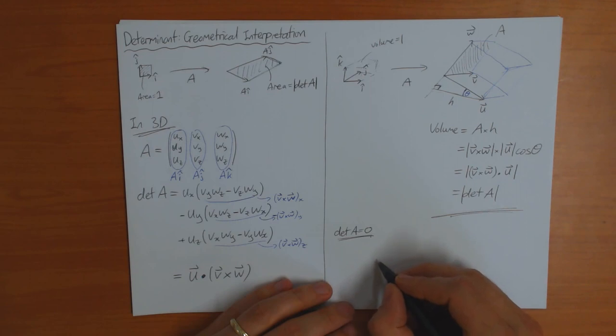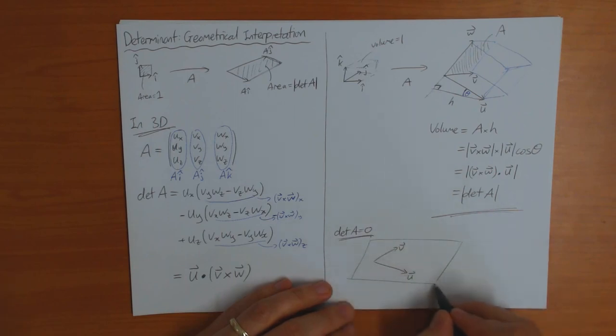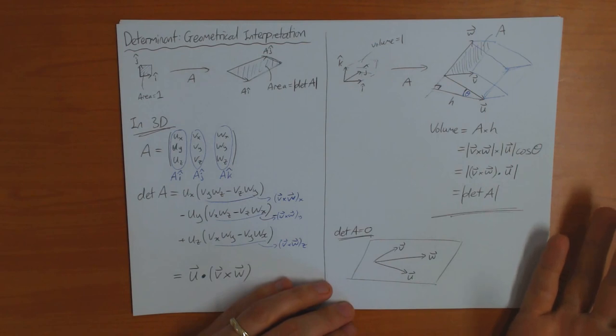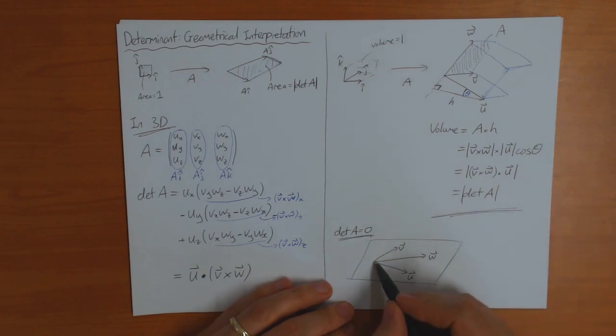The volume of this shape can be zero if, and only if, the vector W lies in the same plane as the vectors U and V. So then the shape is squashed. So it has zero volume. And this is the only way you can get zero volume.